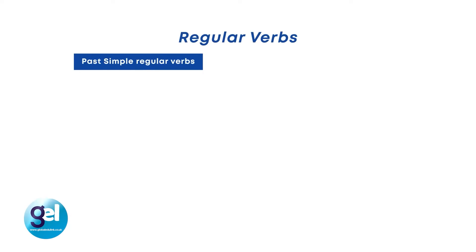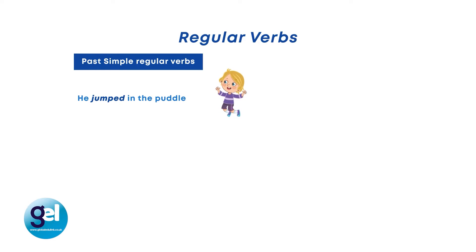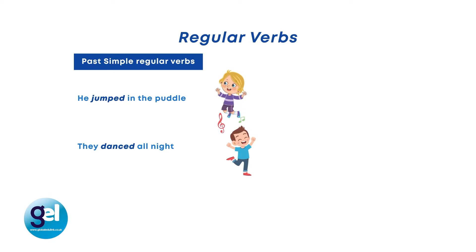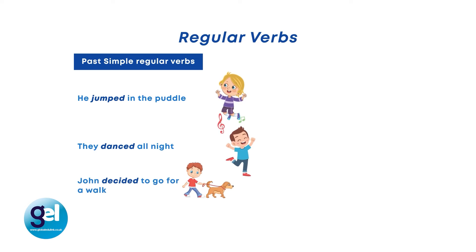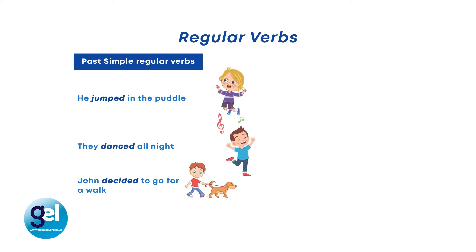Let's focus on regular verbs. A regular verb changes its form by adding ED in both the past simple and the past participle. For example: 'He jumped in the puddle' — 'jump' is a regular verb, we've added ED. 'They danced all night' — 'dance' is our verb, we've added ED and it becomes 'danced.' 'John decided to go for a walk' — the verb 'decide' becomes 'decided' with ED added.